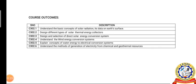After completion of this course, students will be able to understand the basic concepts of solar radiation, its data on Earth's surface, and different types of solar thermal collectors; design and selection of solar PV systems; understand the concept of wind energy conversion systems; and understand how water energy is converted into electrical energy and how electricity is generated from chemical energy.